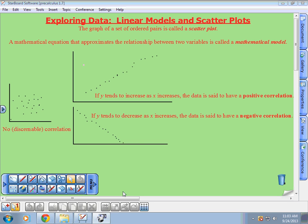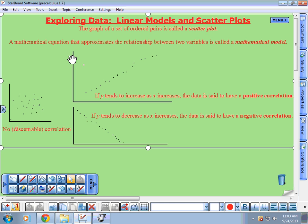So what do we have? We have section 1.7, exploring data, linear models, and scatter plots. The graph of a set of ordered pairs is called a scatter plot. Basically all this is you have your x-axis, you have your y-axis, and you have different coordinates. So whatever your x and y, it gives you a set of data. That's all that is.